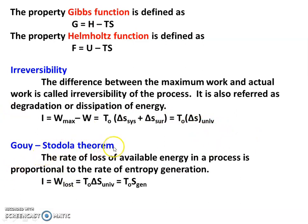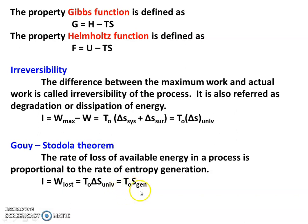The Gouy-Stodola theorem states that the rate of loss of availability in a process is proportional to the rate of entropy generation. The key equation to remember is: I = W_lost = T0·ΔS_universe = T0·ΔS_generation, where ΔS_generation is entropy generation. Therefore, Irreversibility equals T0 multiplied by the rate of entropy generation.